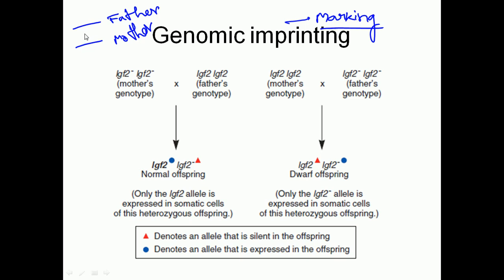Now, what happens in the imprinting case: some of those genes are marked to be expressed only from one parent, not the other. For example, a gene X — that gene X is present both in the father as well as in the mother's chromosome — this gene X is marked to be expressed only from the mother, but not from the father.